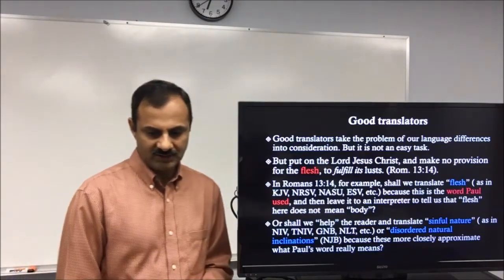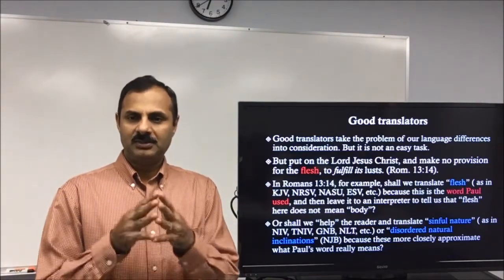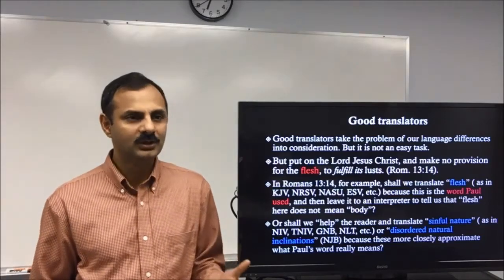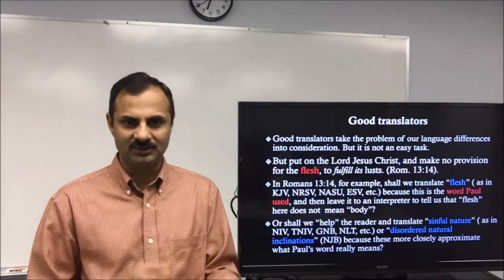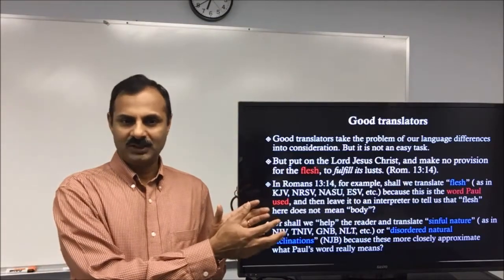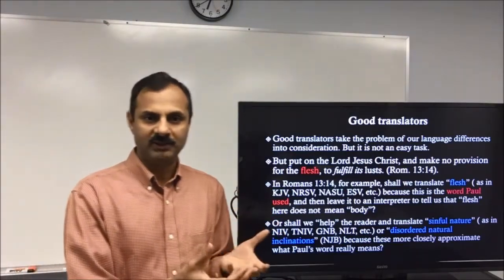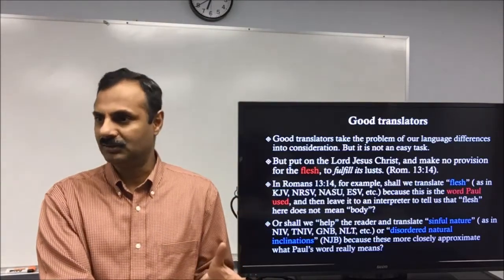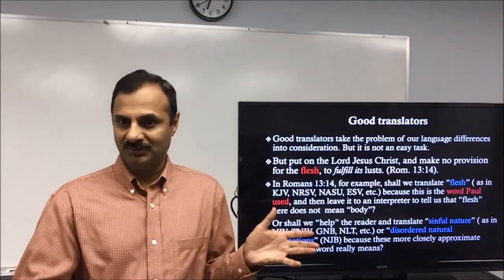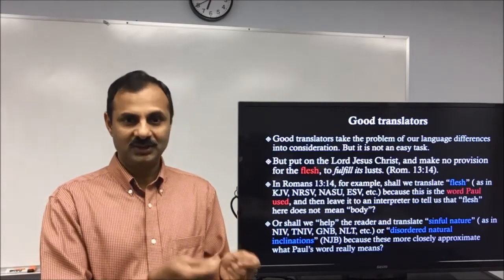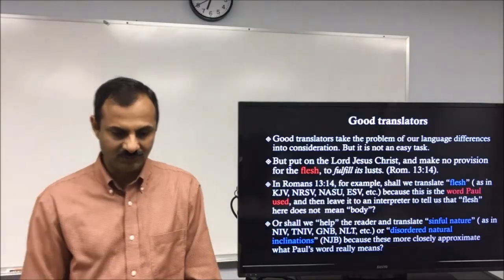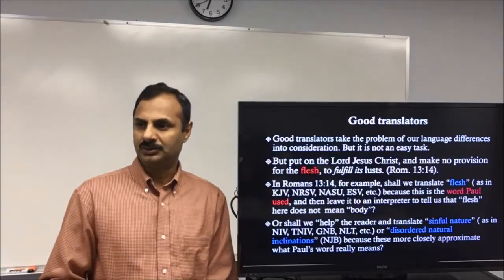Good translations take the problem of language differences into consideration, but it is not an easy task. The Bible is written in Hebrew, Aramaic, and Greek — so how do we get our Bible if we don't know those languages? Somebody has to do the translations for us. The first translation was into Latin. When Latin became more prevalent, people translated the Bible into Latin — called the Vulgate — and that version was used for almost a thousand years.